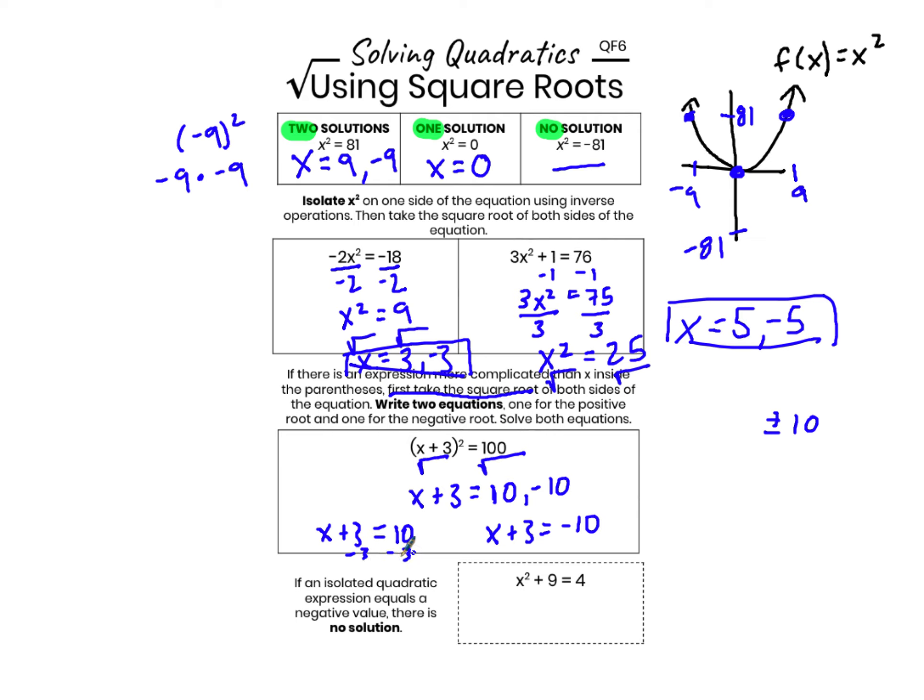Using inverse operations, minus 3, minus 3, I get my first solution, which is x equals 7. If you were just guessing and checking, this is the one you would think of. 7 plus 3 is 10. 10 squared is 100.